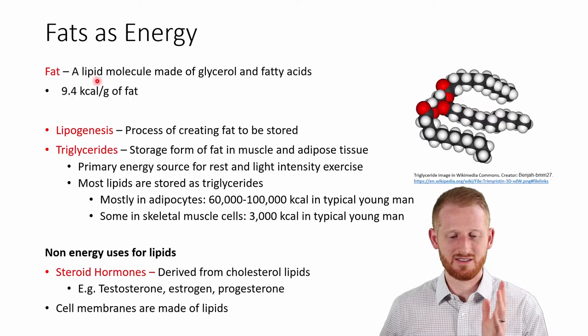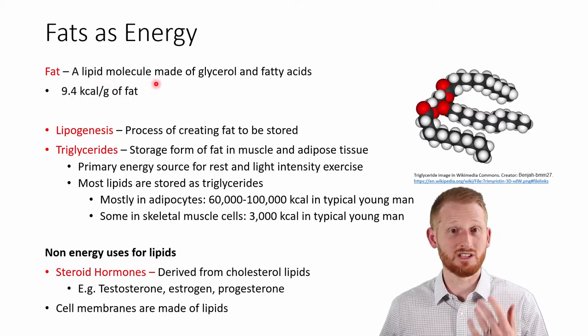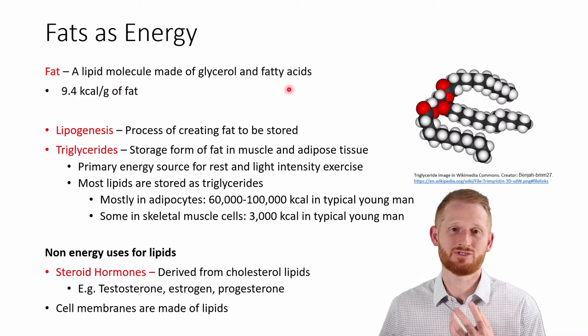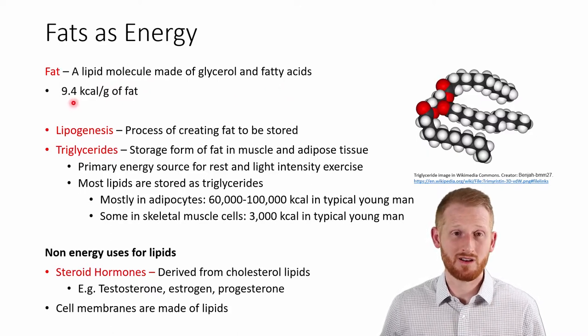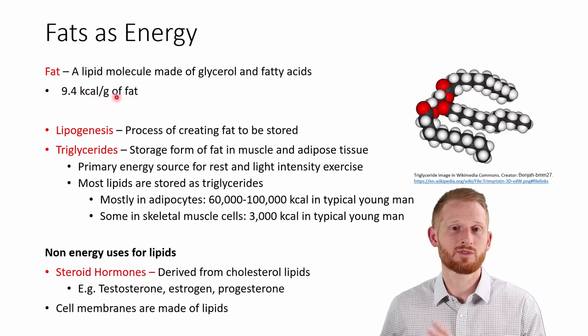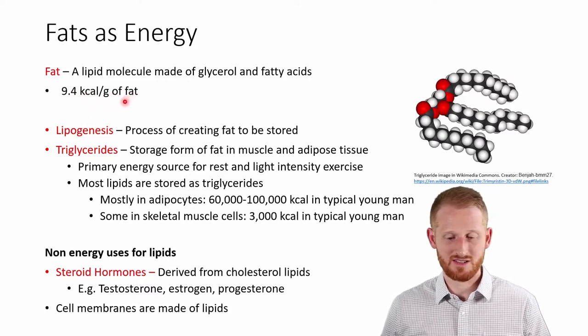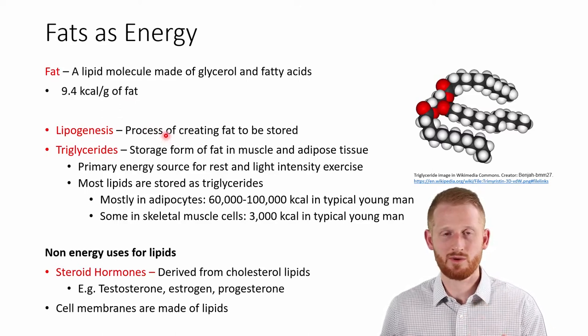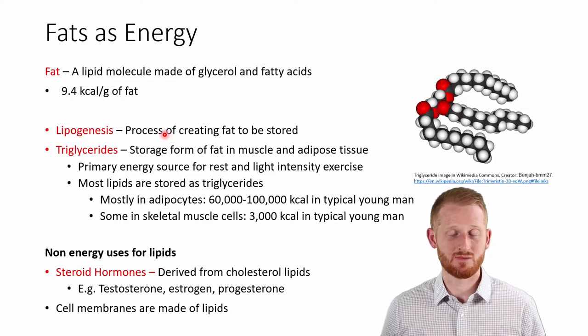Fat is actually where we get most of our energy during rest and also low intensity exercise. Fat is a lipid molecule that combines glycerol and fatty acids into something our body can get energy out of. When we break down fat in our bodies we can get 9.4 kilocalories per gram of fat. The process of creating fat is called lipogenesis, and we can do that from various different sources — proteins, carbohydrates, and fat consumption can all lead to lipogenesis.